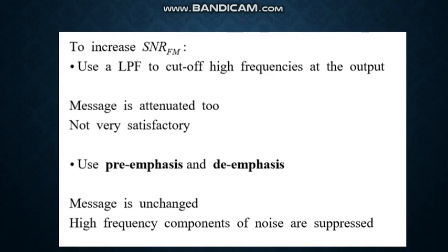To increase the SNR in FM or reduce the threshold, we can first use a low-pass filter to cut off high frequencies at the output. In this, the message is attenuated too, which is not very satisfactory. Another method is to use pre-emphasis and de-emphasis circuits. In this method, the message is unchanged whereas the high-frequency components of noise are suppressed.